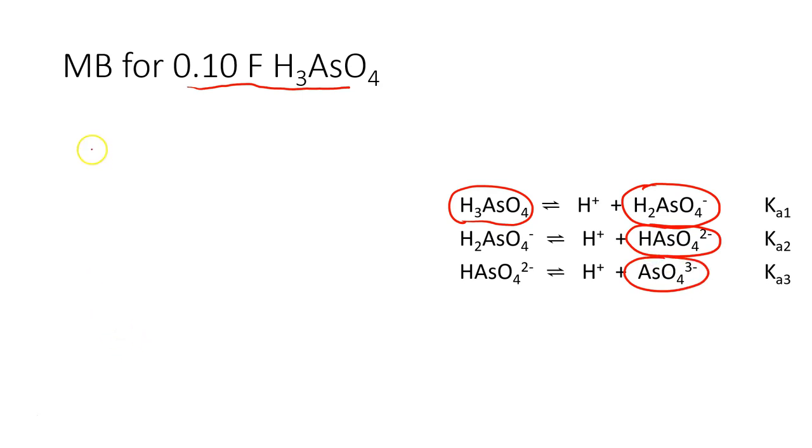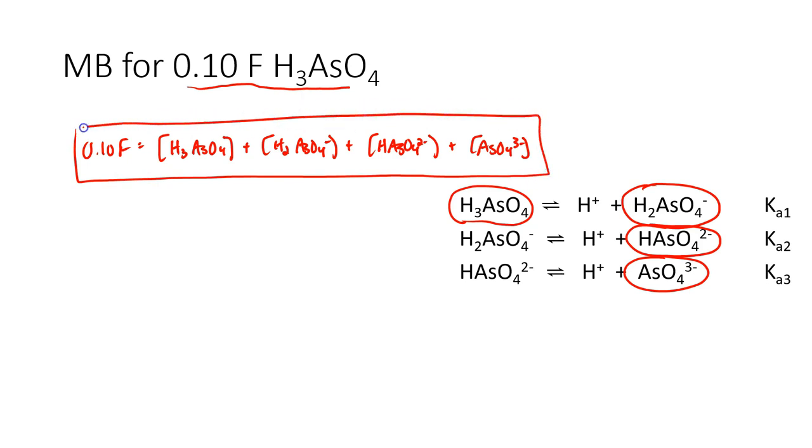So, the mass balance then is 0.10 formal equals the sum of all those different forms. So, arsenic acid plus dihydrogen arsenate plus hydrogen arsenate plus arsenate. All those different forms better add up to 0.1 formal.